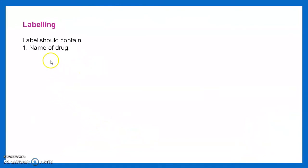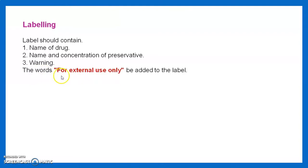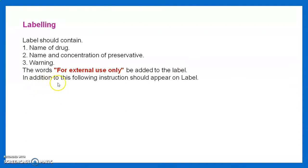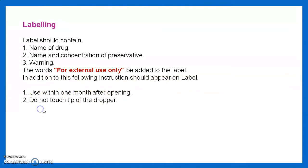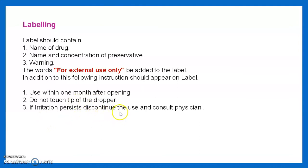Labels should contain the name of the drug and name and concentration of preservatives. Warnings such as 'for external use only' must appear on the label. Additional instructions include: use within one month after opening, do not touch the tip of the dropper, and if irritation persists discontinue use and consult a physician.